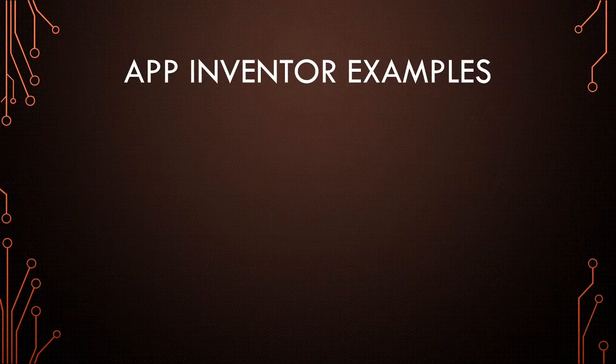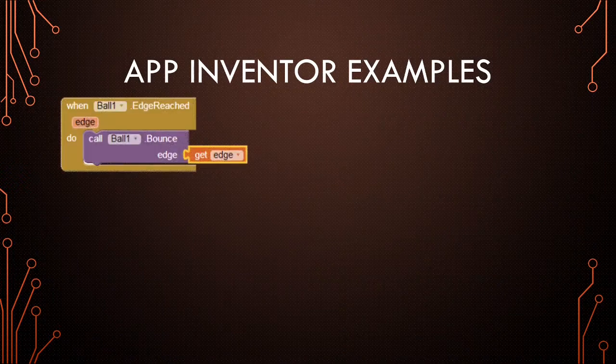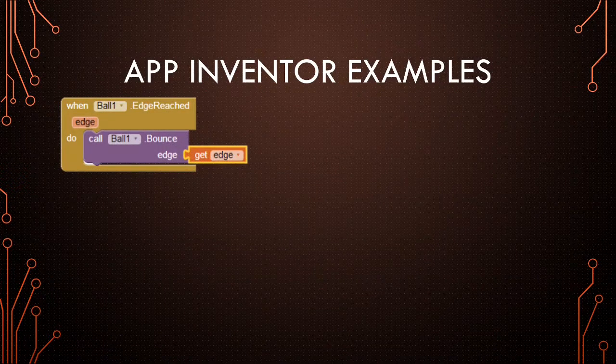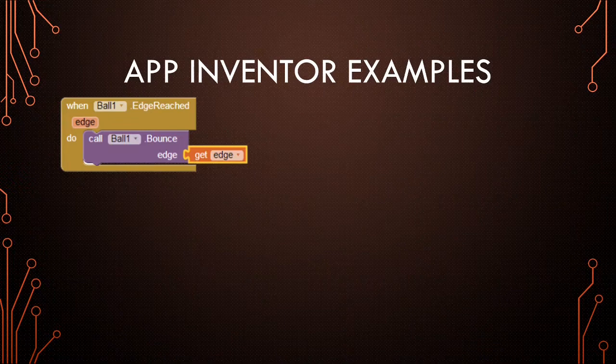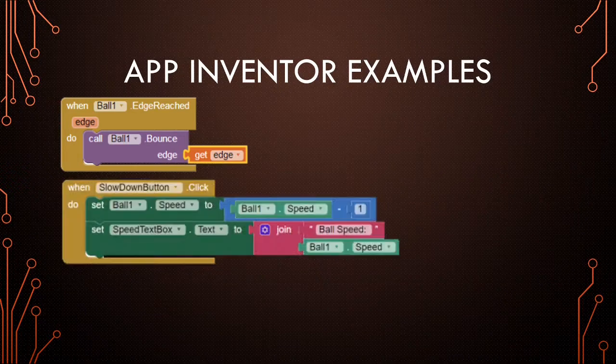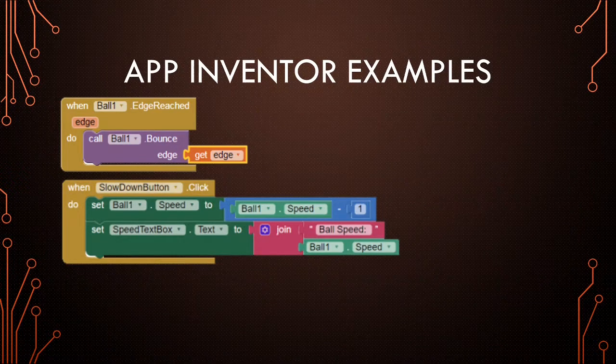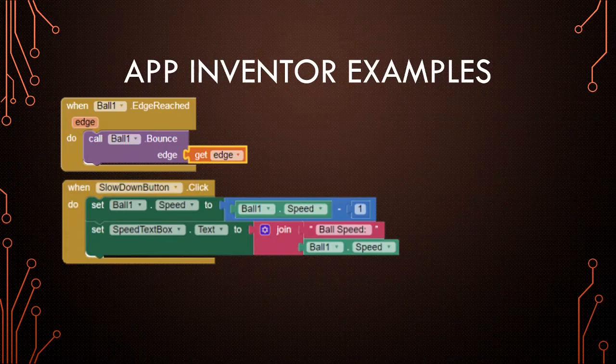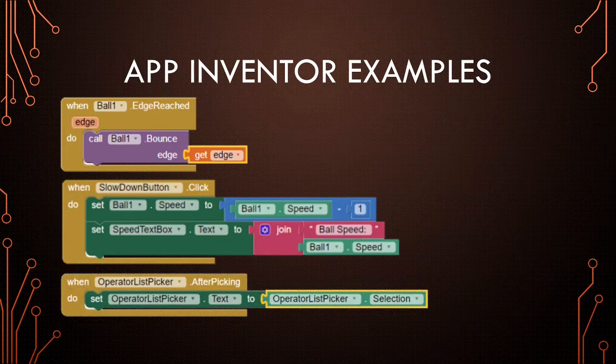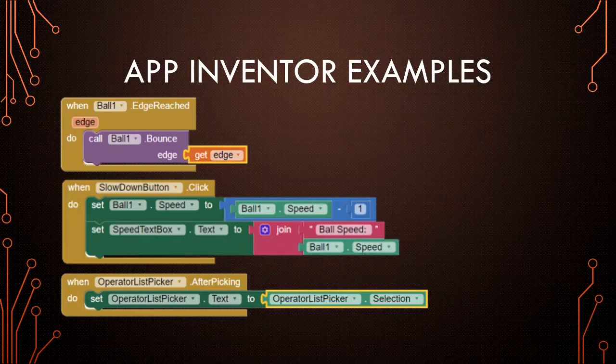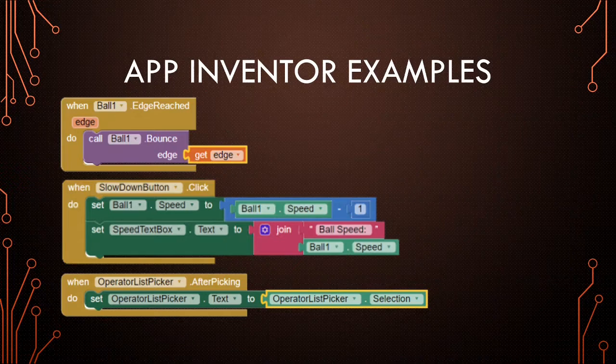Let's take a look at some examples from the apps that you've already created. In the first one, we had an object called the ball and the event was called edge reached. When the ball got to the edge of the screen, it bounced back in the other direction. In the second lesson, we had a button called slow down that decreased the speed of the ball when we clicked on it. So the object was the slow down button and the event was click. In the next lesson, we had a list picker. When the user picked something from the list, then the event called after picking was run. So the object was the operator list picker and the event was after picking.